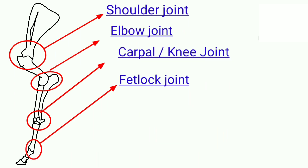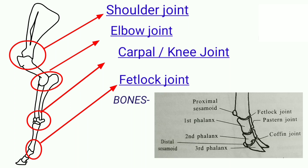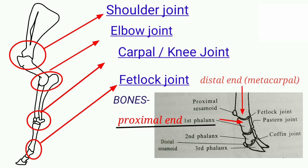Fourth is the fetlock joint. The type of joint is also hinge joint. The bones involved in the fetlock joint are the distal end of the metacarpal with the proximal end of the first phalanx and the proximal sesamoid bone.